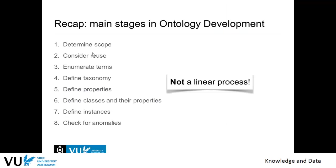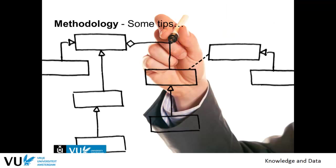In overview, the phases of ontology engineering methodology are: determining your scope, thinking about existing ontologies, listing all terms used in your domain to identify classes and class hierarchy and properties, explicitly defining the taxonomy and properties along with global rules or class axioms, defining or adding the instances (automatically or manually), running the reasoner and checking for anomalies. If you have anomalies, you probably have to go back to defining classes and properties, or even earlier to the taxonomy itself.